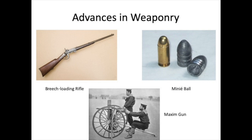Machine tools also made possible new advances in weaponry. Breach-loading rifles, such as the one Rhodes had on his shoulder, could be reloaded and fired much more quickly than traditional rifles. Think of the American Civil War — those rifles had loaded through the muzzle. The minié ball, with its tapered shape and grooved sides, was a much more accurate and therefore deadly bullet than previous ones.